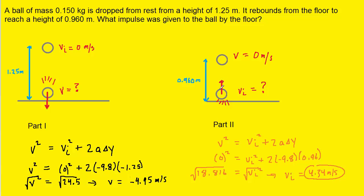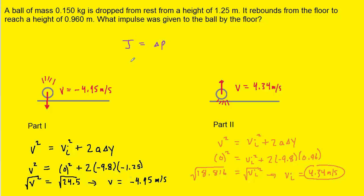We are now prepared to calculate the impulse that was given to the ball by the floor. Now, we know that impulse, which is typically represented by the letter J, is equal to a change in momentum. Now, a change in momentum can be rewritten as a mass times the change in velocity, which would be the final velocity minus the initial velocity.